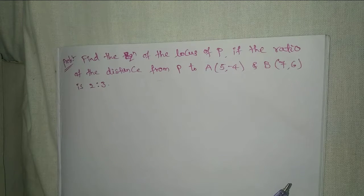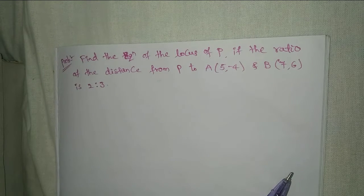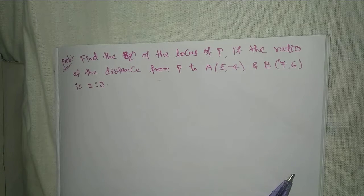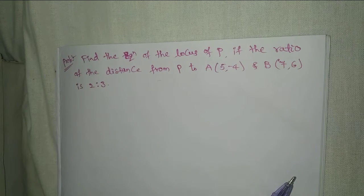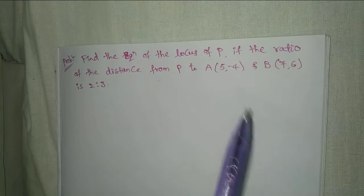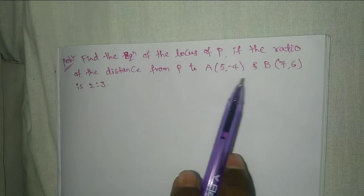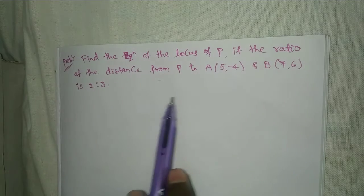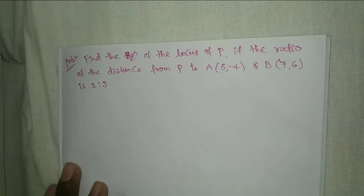Welcome to Rajesh Lekaloo. Today our topic is Locus, Interview in first year mathematics B. Find the equation of the locus of P if the ratio of the distance from P to A(5, -4) and B(7, 6) is 2:3.